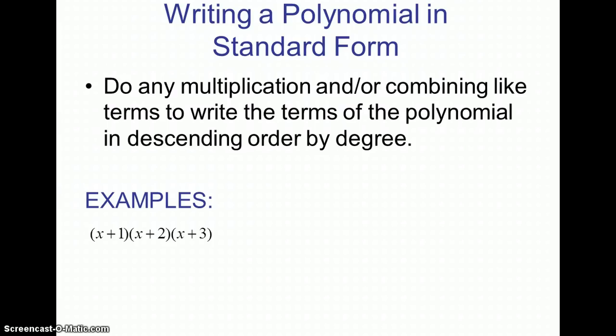When we write a polynomial in standard form, we talked about this in the last section. We need to multiply, combine like terms, do whatever we can to get as few terms as possible, as well as put them in descending order by degree.